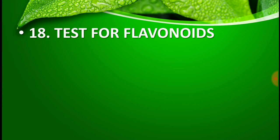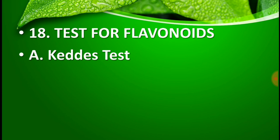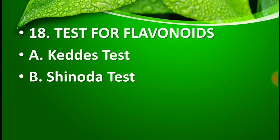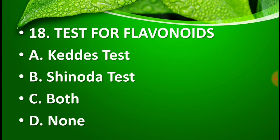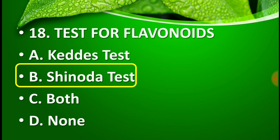Question number 18: The test for flavonoids is — option A: K-test, option B: Shinoda test, option C: both, and option D: none of the above. The right answer is option B — the Shinoda test is performed for flavonoids.